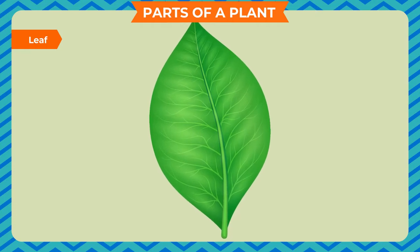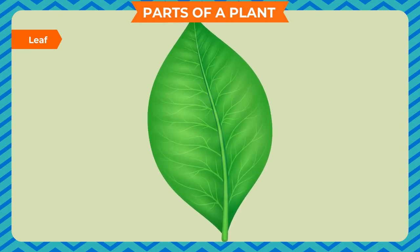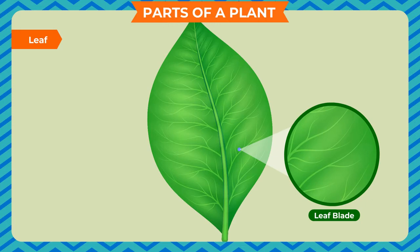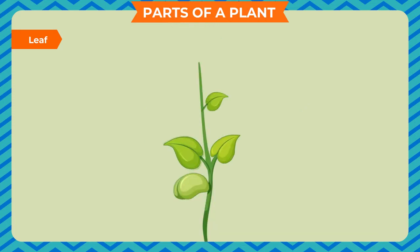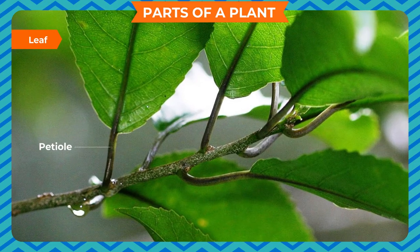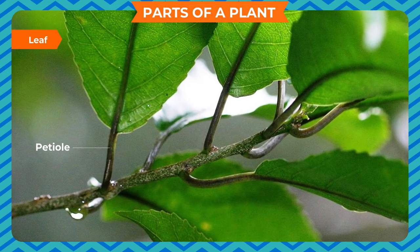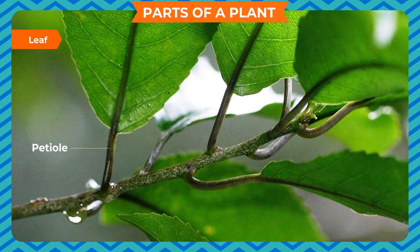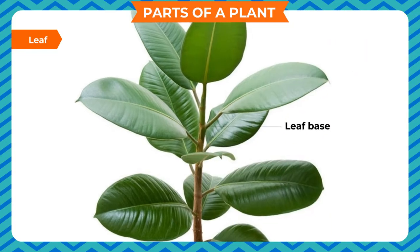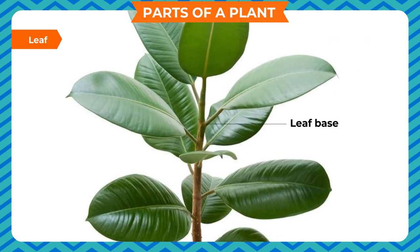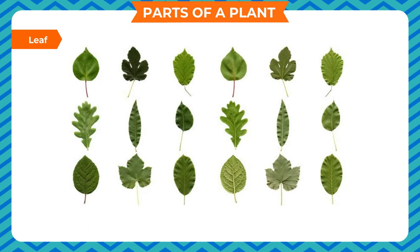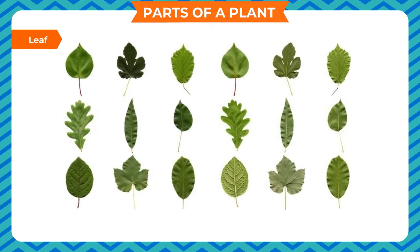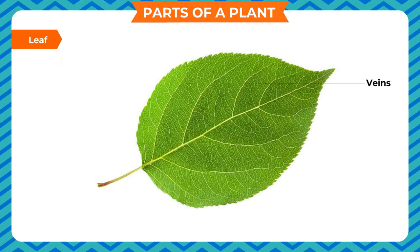A green flattened structure in a plant is the leaf, also named the lamina or leaf blade. It arises from the node of a stem or its branches. The petiole is the narrow short stalk that attaches the leaf to the stem, and the leaf base is the region of attachment of the leaf with the stem. Leaves differ in shape and size.